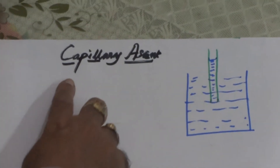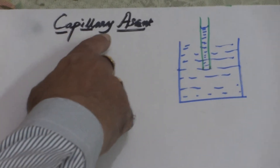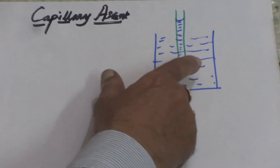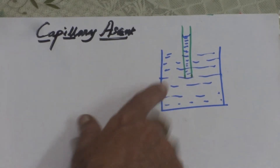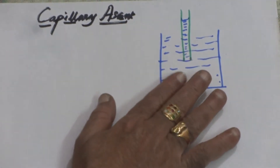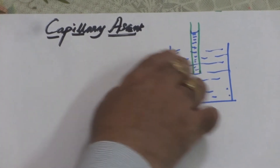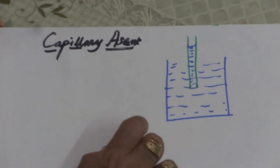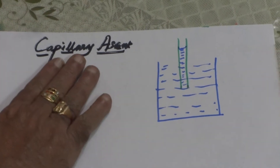Today let us discuss in fluid mechanics the capillary ascent. The meaning of capillary means it is hair-thin — a tube which has a very small radius compared to its length, and we call it a capillary tube. Whenever we dip a capillary in any liquid, the liquid rises. In some cases the liquid rises, and in other cases there will be capillary descent. Wherever the liquid height is below the liquid level in the container, we call it capillary descent.